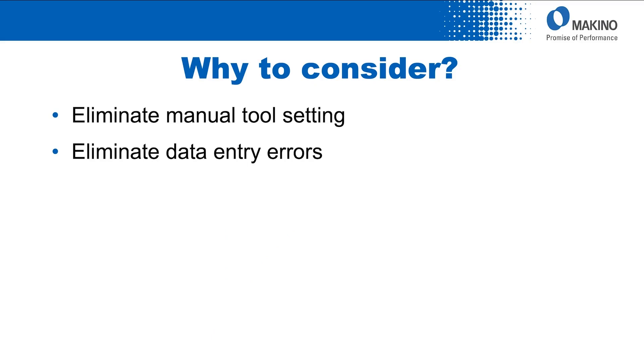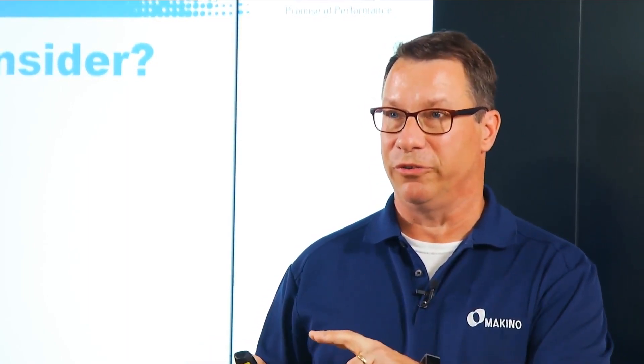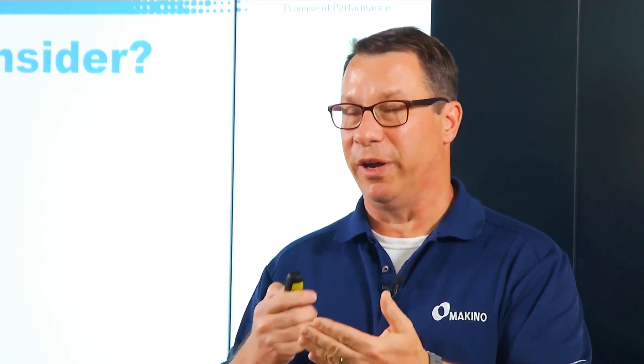It eliminates data entry errors. Think about, for example, you check the tool offline and it's 320 millimeters long. You bring it over to the machine, get momentarily distracted, and type in 230 millimeters instead — you've got a 90 millimeter mismatch. In this particular case, the first time you use that tool, it's probably going to go 90 millimeters too close to the part relative to where you want it to be. The in-machine tool measurement capability would eliminate that possibility.